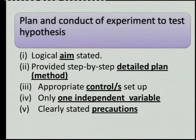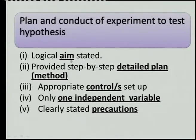These are the steps we follow when we do an experiment. We need an aim. If they ask you for an aim, an aim is not the hypothesis. An aim always starts with the words 'to' — to investigate, to prove, to test something. Then you must have a detailed plan of your method, a step-by-step — that is what is meant by detail.